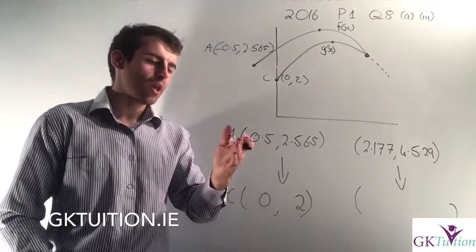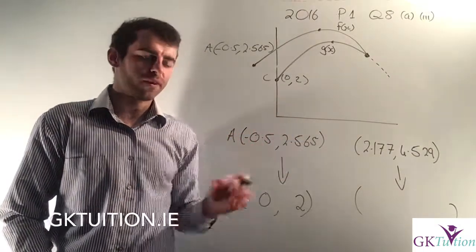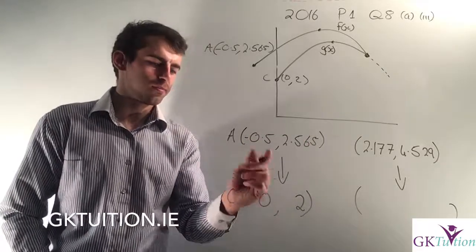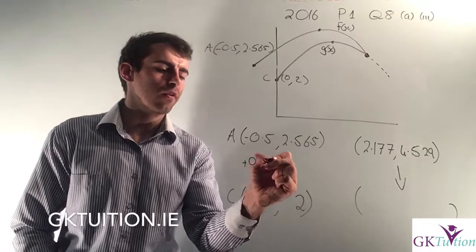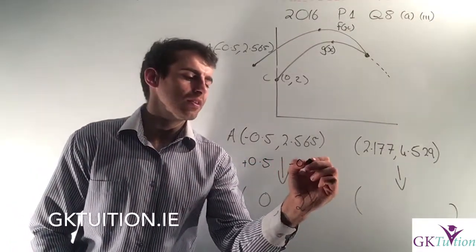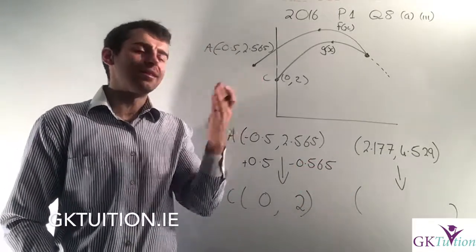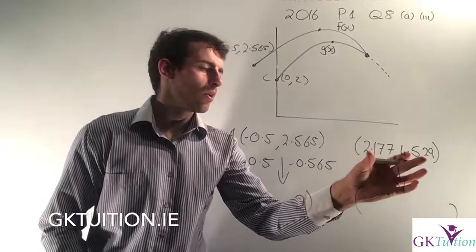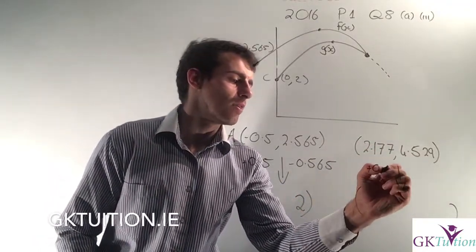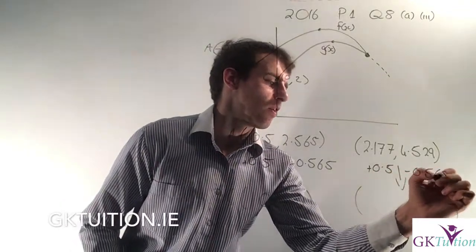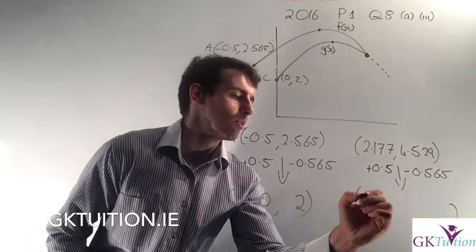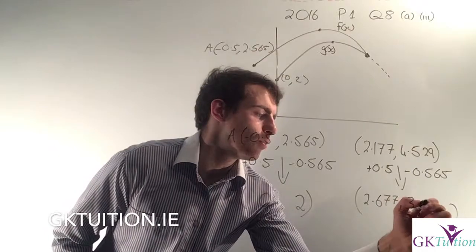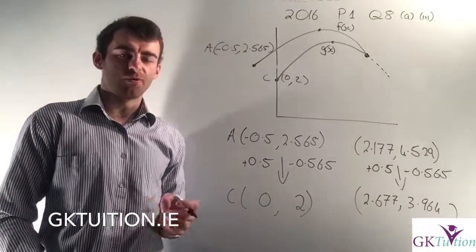I've set up the translation. I know that coordinate A is (−0.5, 2.56, 5) — actually coordinate A is (−0.5, 2.565) and coordinate C is (0, 2). Looking at the x coordinates I've added 0.5, and in the y coordinates I've subtracted 0.565. So I apply the same translation to the maximum of f(x): add 0.5 to x gives 2.177 plus 0.5 equals 2.677, and subtract 0.565 from y gives 4.529 minus 0.565 equals 3.964. That's the maximum of g(x).